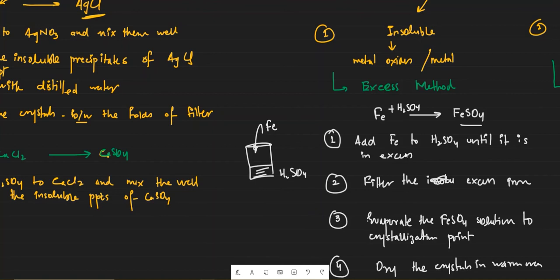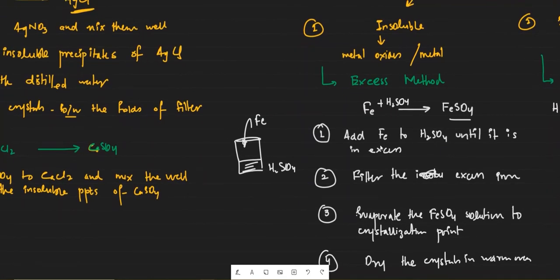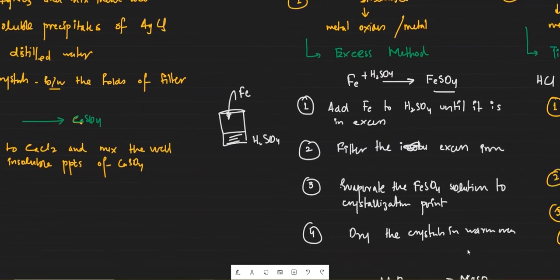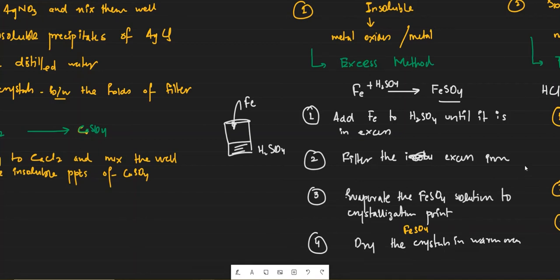The first step is to add the insoluble starting material to a suitable acid until it is in excess. Then filter the excess insoluble starting material — in this case, excess iron. You are left with a soluble salt solution. Evaporate the solution to crystallization point, then dry the iron sulfate crystals in a warm oven.